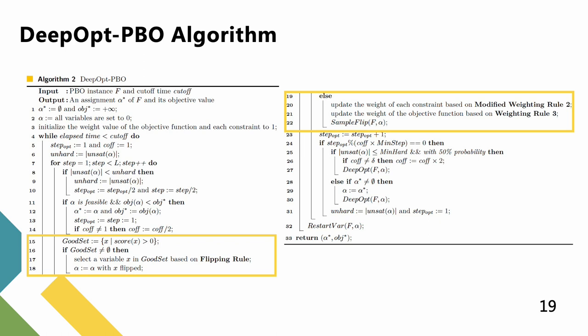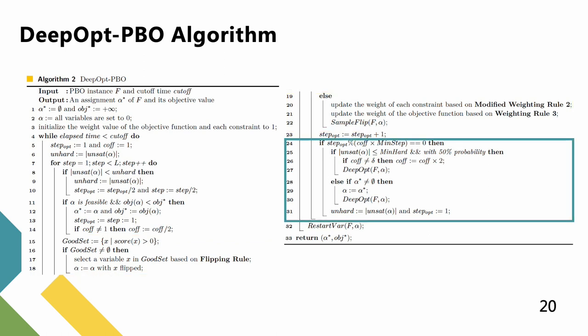The algorithm uses the modified weighting rule 2 and weighting rule 3 to update the corresponding weight values. The algorithm judges whether to call the DeepOPT method at each κ times mean step iteration.